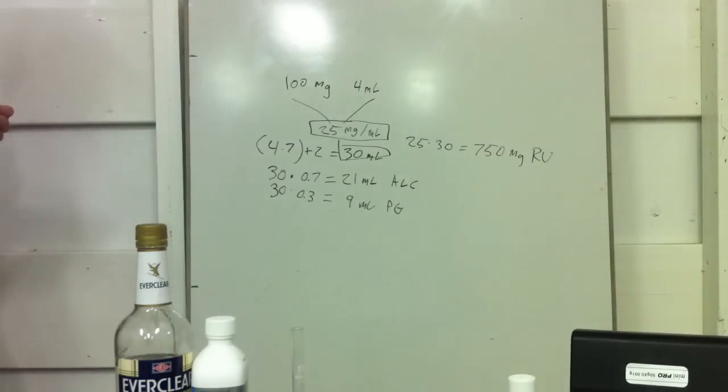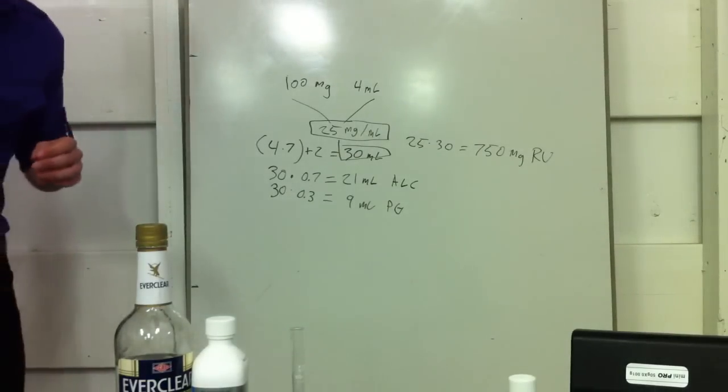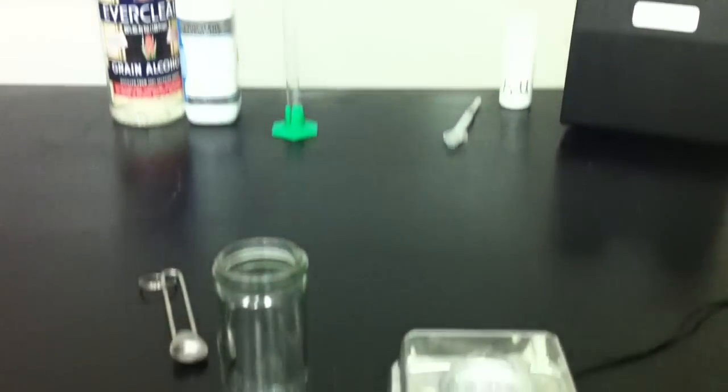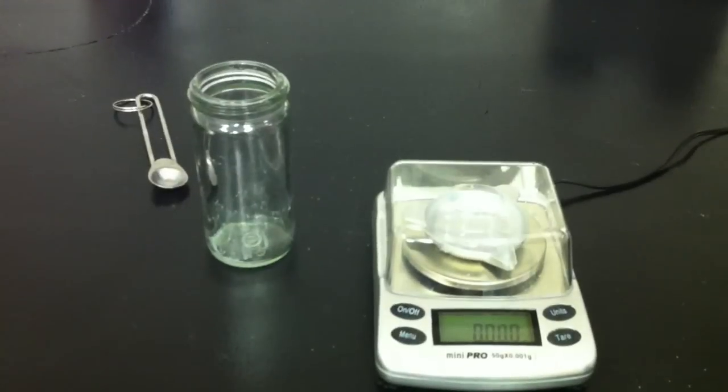So now we will weigh out the 750 milligrams of RU. My scale that I use is a Mini Pro. And you do need a fairly accurate scale to do this of course down to the thousandths.